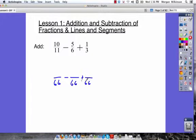To figure out what those somethings are, well, we multiplied 11 times 6 to get to 66, so 10 times 6 is going to be 60. We multiplied 11 times 6 to get to 66, so 5 times 11 is 55. And we multiplied 3 times 22 to get to 66, so 1 times 22 is 22. Very good.